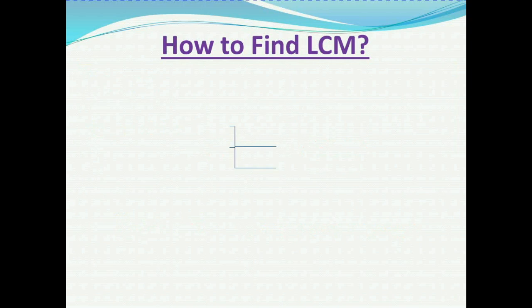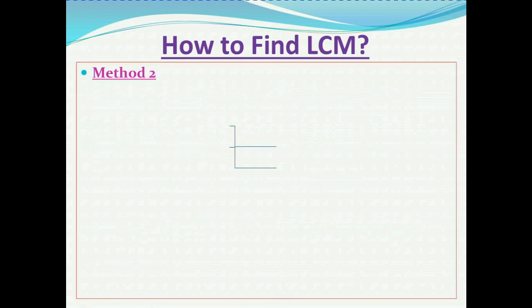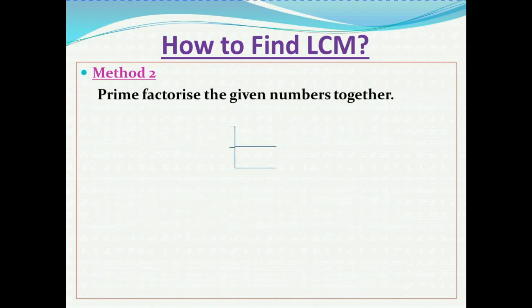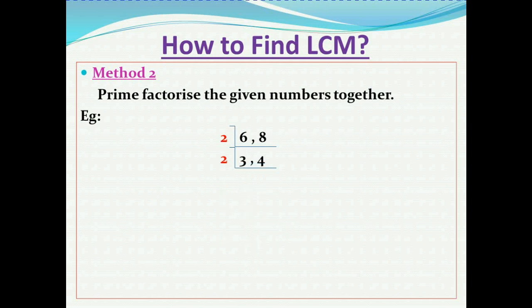Next we consider another method — the second method to find LCM. We divide the numbers together using their prime factors. Here we divide 6 and 8 by 2, because both are even numbers. We get 3 and 4. Again we try to divide by 2.